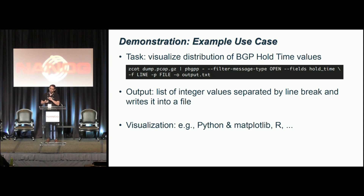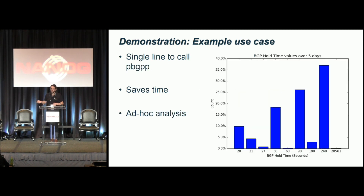Here's a quick demonstration. The task was simple: find the distribution of BGP hold timers at the IXP, outputting a list of integer values separated by line breaks. We processed a couple of days of data — the command is straightforward, just specifying the field 'hold timer' and writing it to a file.